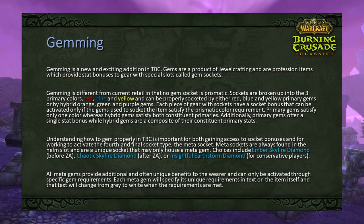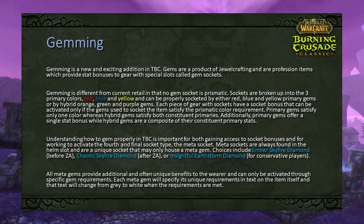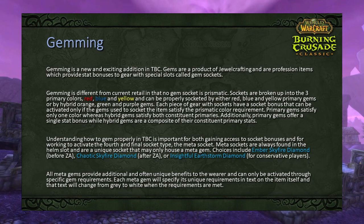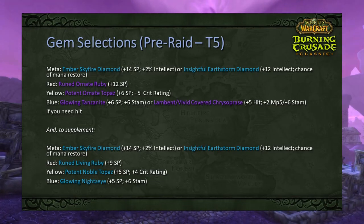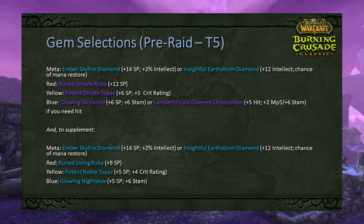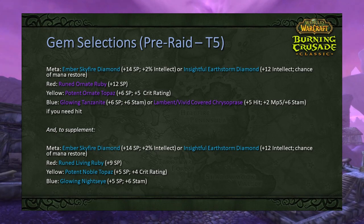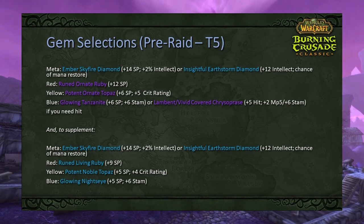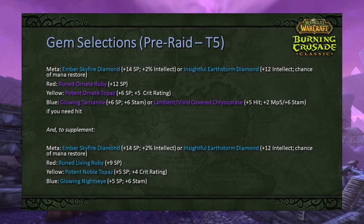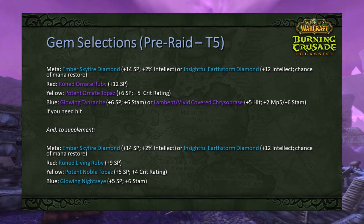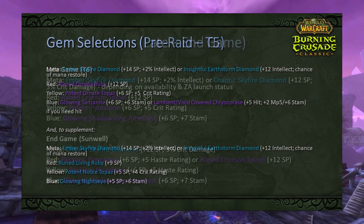In the early game (pre-raid through tier 5) your gem selections will be: Meta — Ember Skyfire Diamond or Insightful Earthstorm Diamond if you're worried about mana. Red — Runed Ornate Ruby. Yellow — Potent Ornate Topaz. Blue — Glowing Tanzanite, Lambent, or Vivid Chrysoprase. Since epic quality gems are hard to come by early, blue quality alternatives are: Red — Runed Living Ruby; Yellow — Potent Noble Topaz; Blue — Glowing Night's Eye.